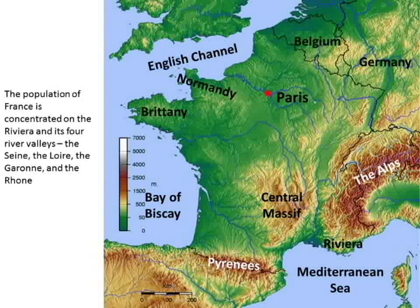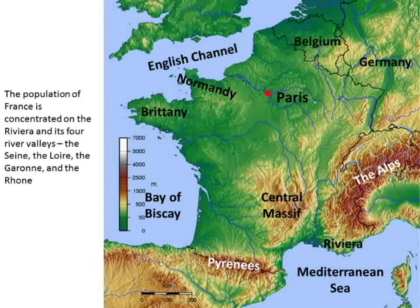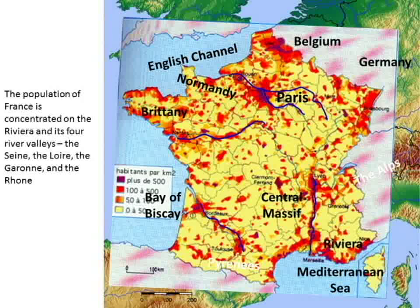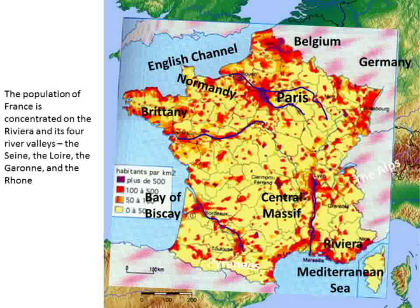The population of France is concentrated on its river valleys. There are four major rivers in France: the Seine, the Lor, the Rhone, and the Garonne. When the population map overlays the physical map, you can see all of these rivers hold the population. It's also really populated up here by Belgium, and on the Riviera as well, and to the east. But the central portions are less populated.